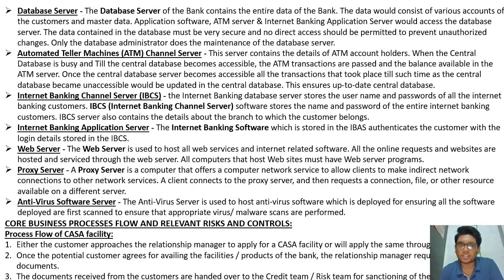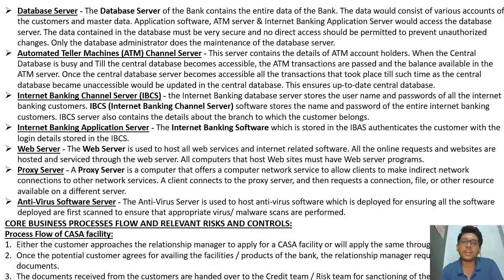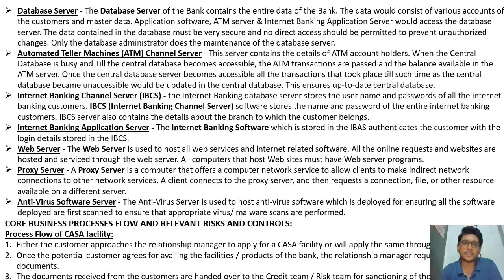The database server contains all data of the bank, including various customer accounts and master data. The application server, ATM server, and internet banking application server all access the database server. Data in the database must be secure with no direct access permitted to prevent unauthorized changes — only the database administrator performs maintenance. The ATM channel server contains details of ATM account holders. When the central database is busy, ATM transactions are processed using the balance in the ATM server and later synchronized once the central database becomes accessible.